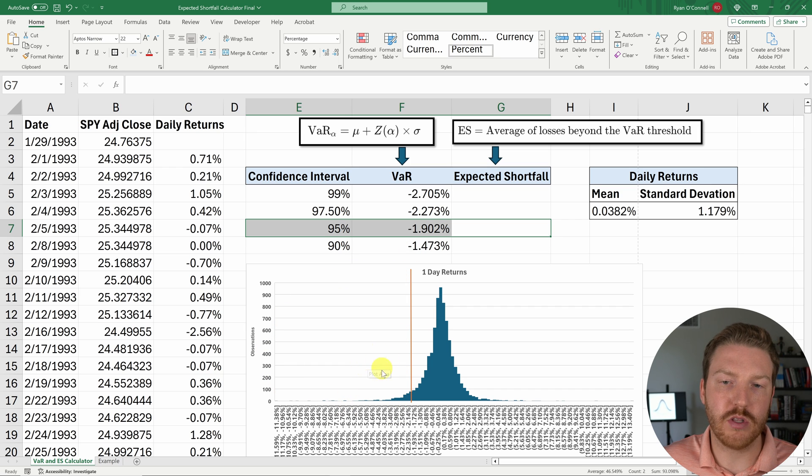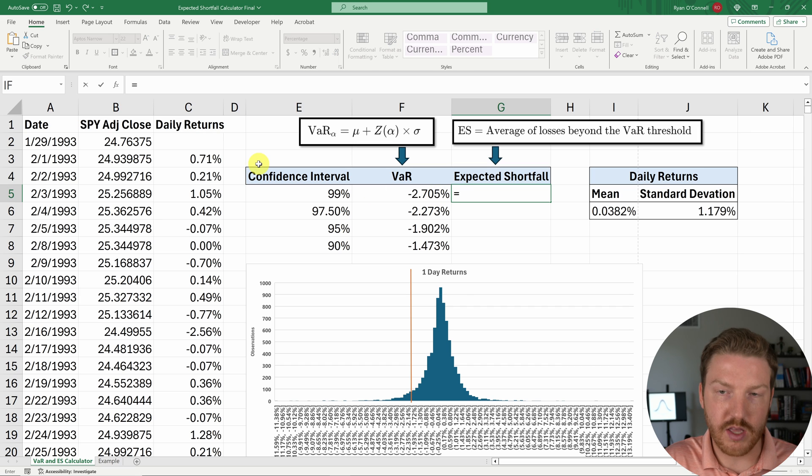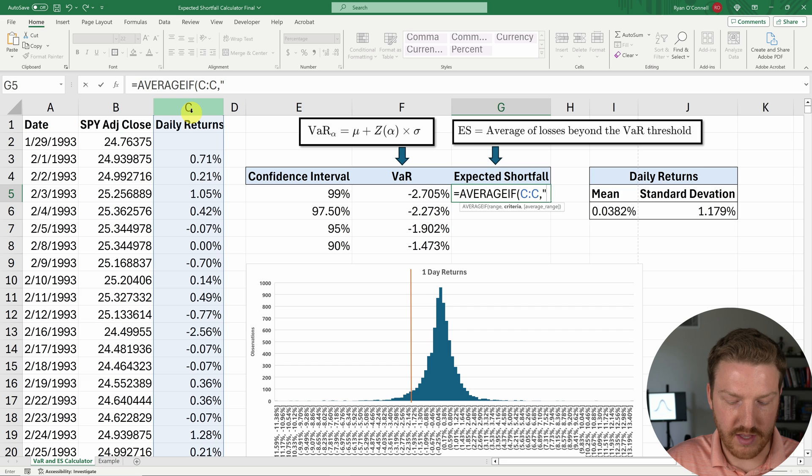Now, how would we go about calculating that? Well, it turns out there's a handy formula in Excel called AVERAGEIF, where we can grab a range, which we'll use our daily returns. Our criteria is that we're going to find everything that is less than or equal to this VaR value. And then our average range is going to be the daily returns once again, and hit enter.